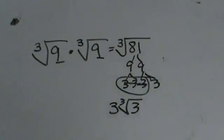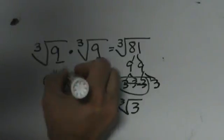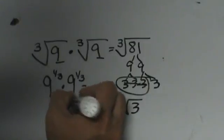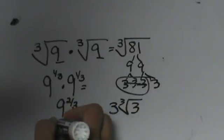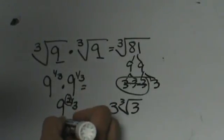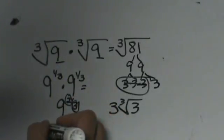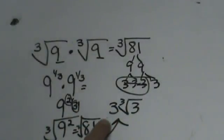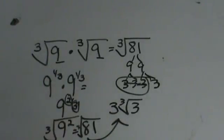Why can we do that thinking about rational exponents? This is 9 to the 1/3 times 9 to the 1/3, which becomes 9 to the 2/3. Well, 9 to the 2/3 means taking 9 and squaring it — so 9 squared is 81. But remember, the 1/3 base means a cube root, so we have to take the cube root of that answer. The cube root of 81 is 3 times the cube root of 3. So whether you use the radical way or the rational exponent way, the answer is the same — I want you to be able to see both.